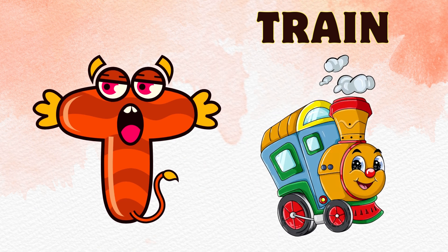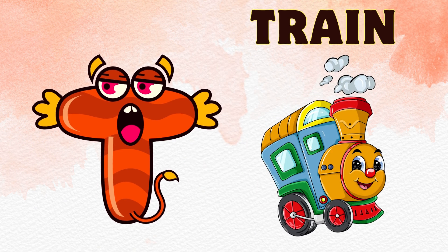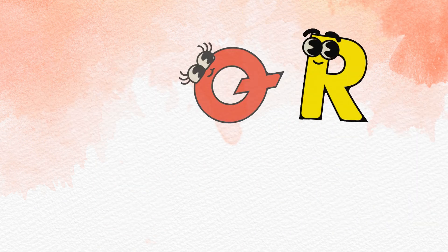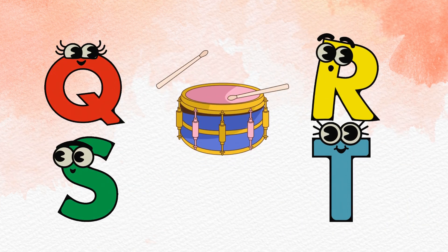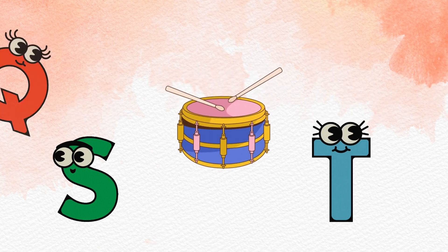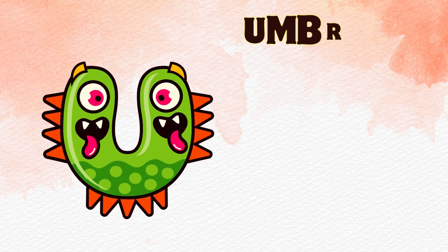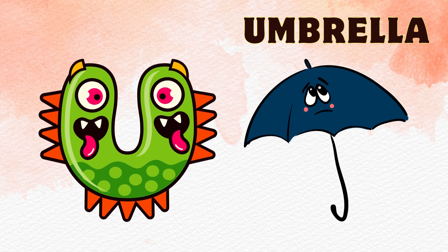T is for Train, T-T-Train. U is for Umbrella, U-U-Umbrella.